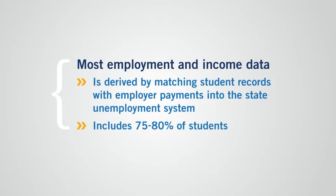With employment and income data being new to the accountability system, we should take a couple more minutes to touch on these. Most employment and income data come from matches of student records with employer payments into the state unemployment insurance system. While this system captures a healthy percentage of our students — between 75% and 80% — it doesn't account for all students. Two notable groups who are not captured by the system are self-employed individuals and individuals who do not have a social security number. This leads to gaps in the data for certain occupations and specific groups. For example, most cosmetologists and real estate agents are self-employed.